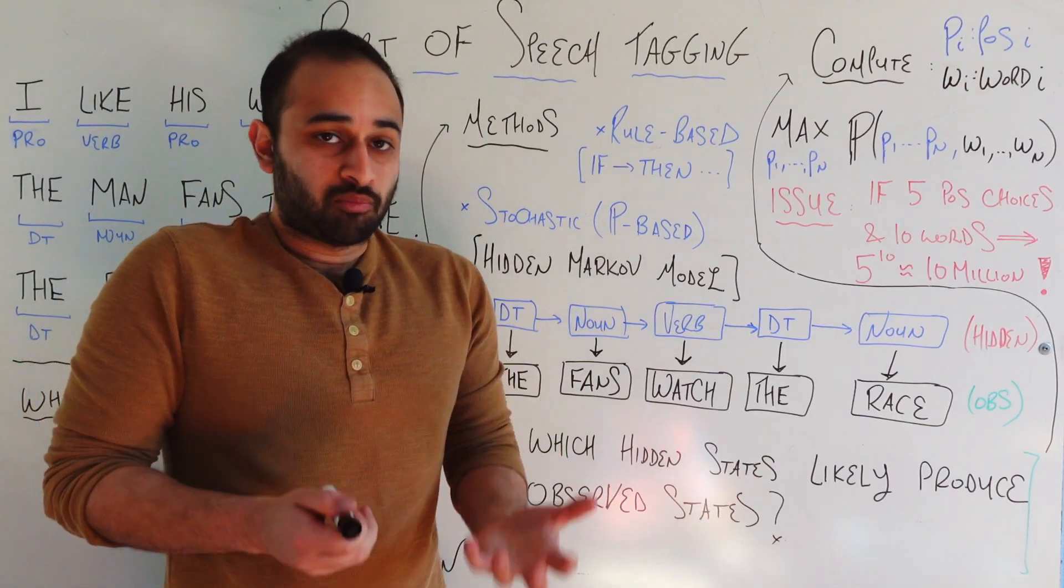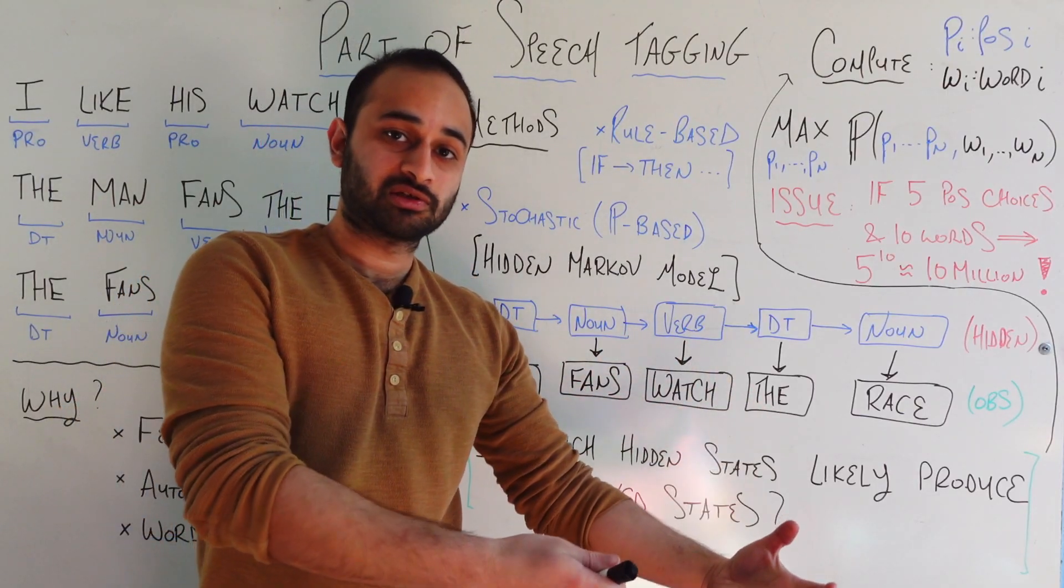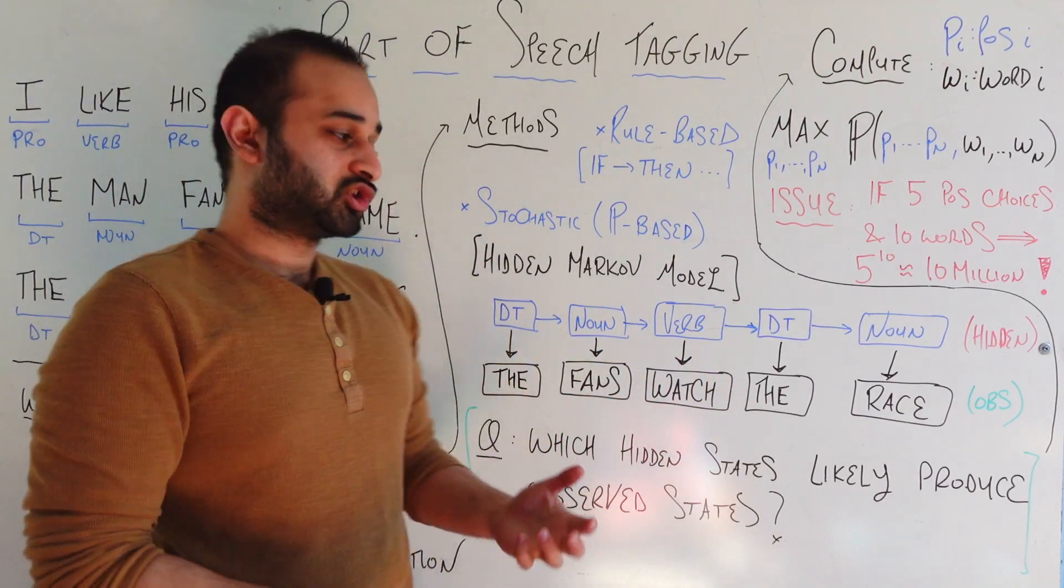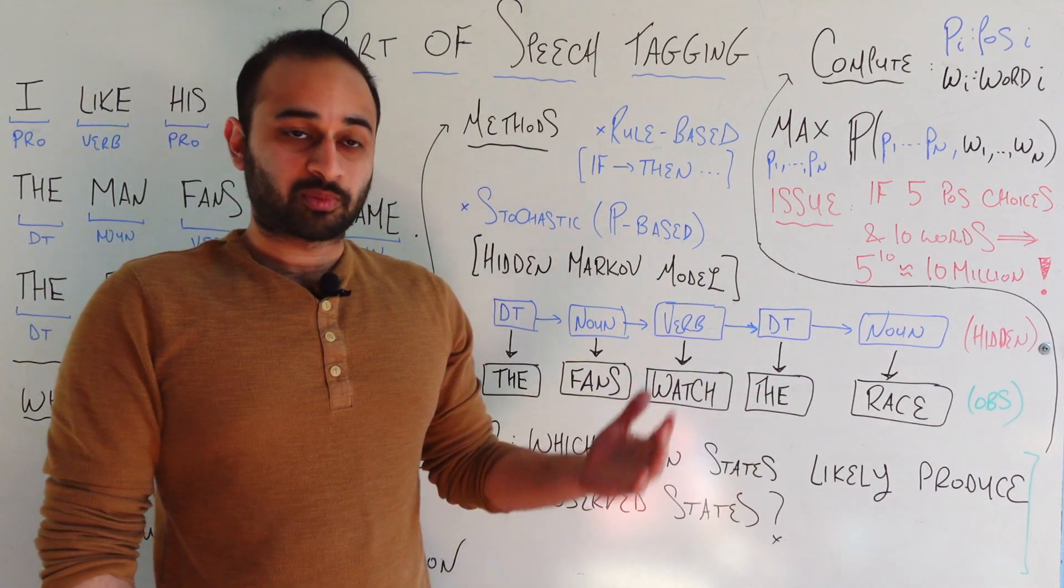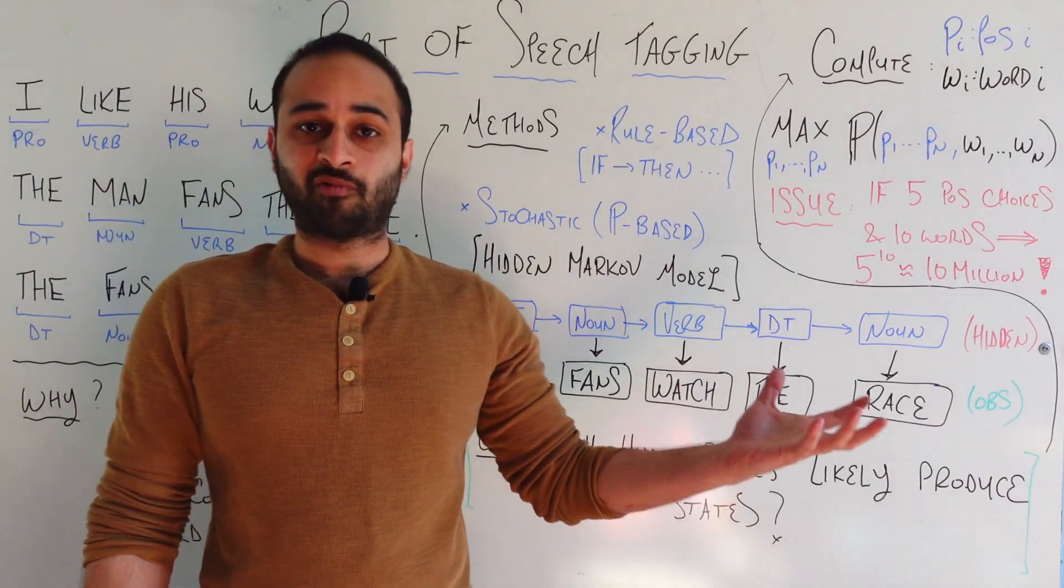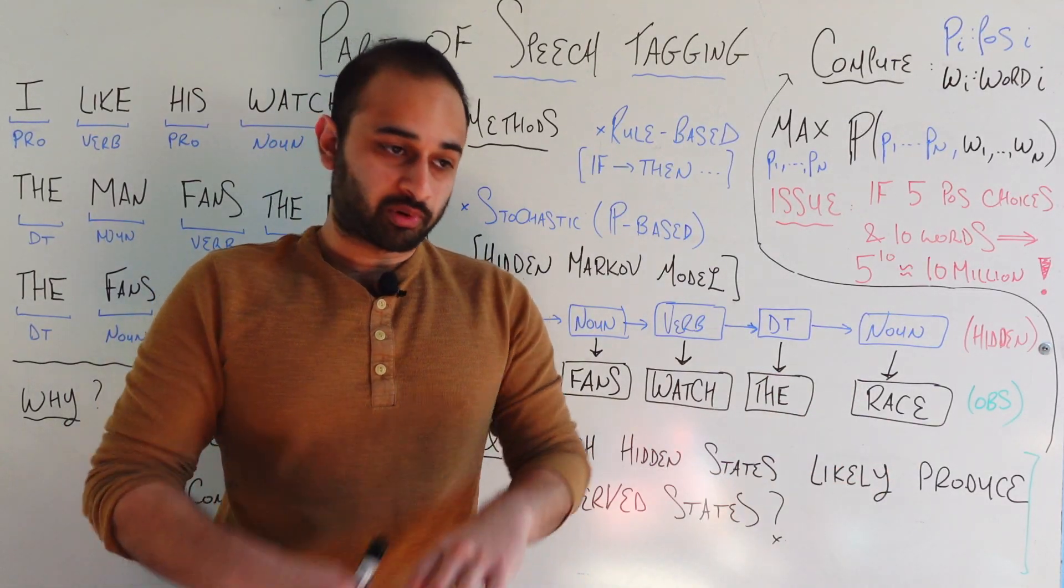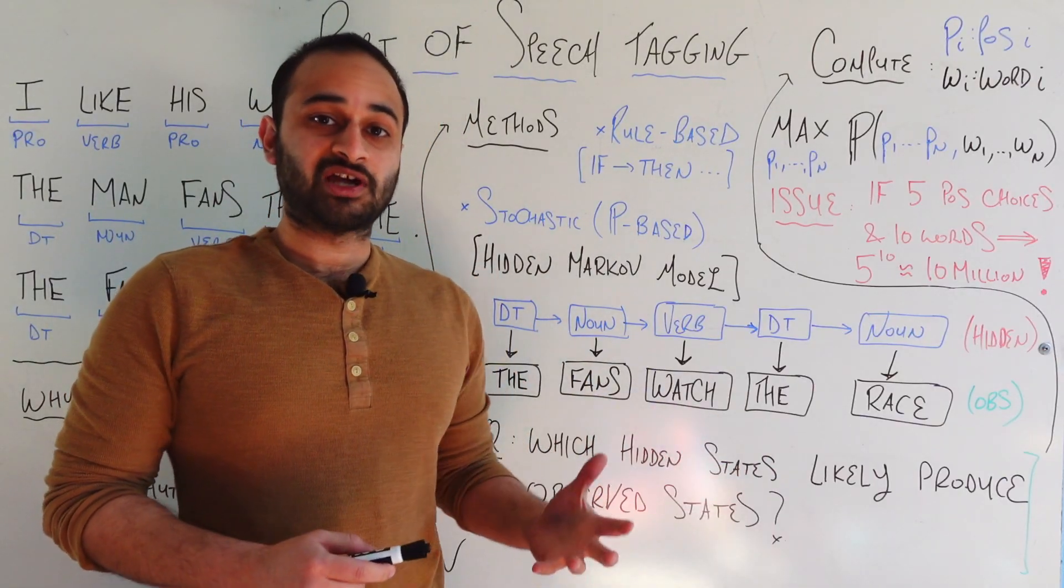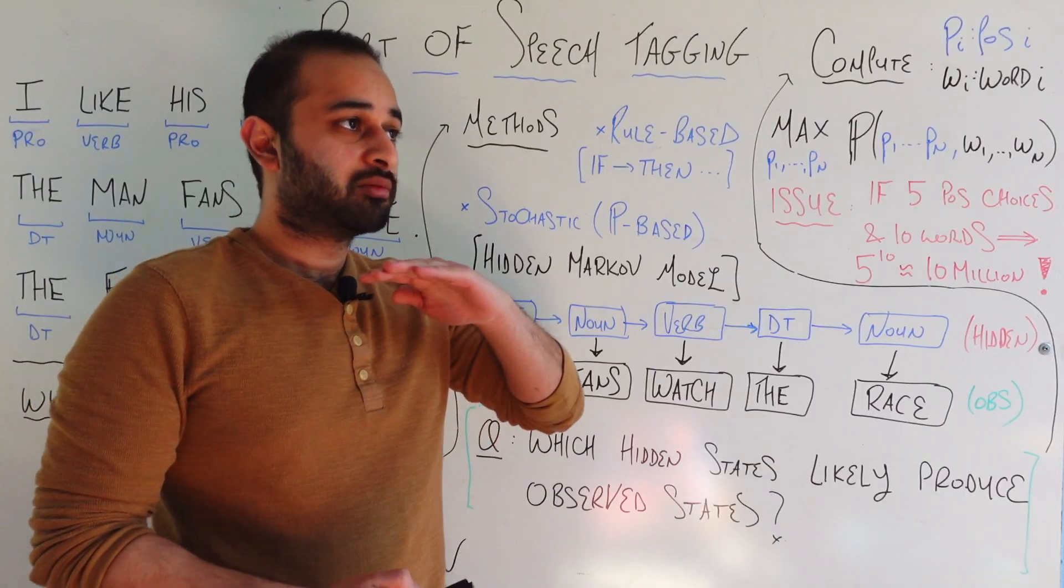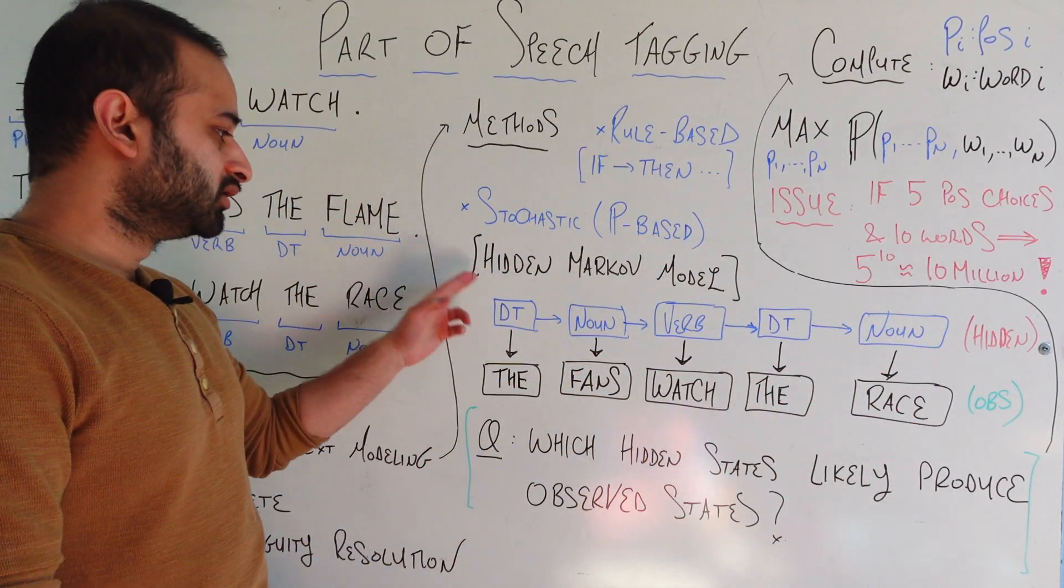But the Hidden Markov Model treats this sentence as a very interesting structure. So again, if we go back to the Hidden Markov Model, the premise is that we observe some states. So for example, we look at a sentence such as the fans watched the race, and we observe that. We can see that on the piece of paper in front of us. Now, the Hidden Markov Model, as the name hidden suggests, also says that there are some hidden states, some unobserved states, which generated the observed states that we did see.